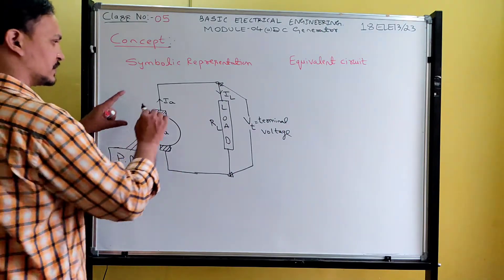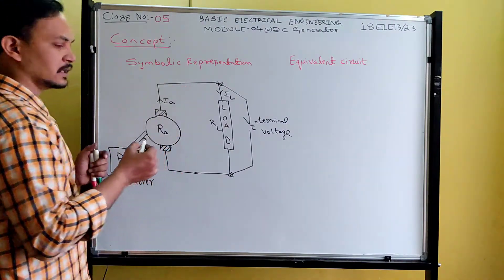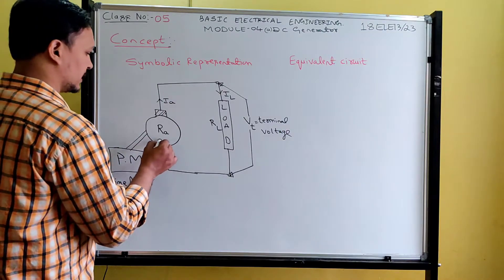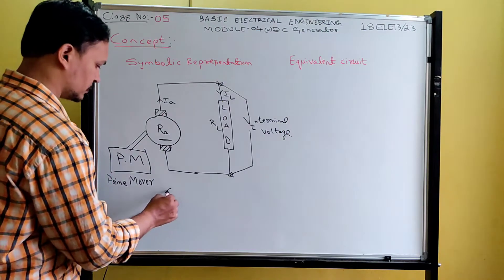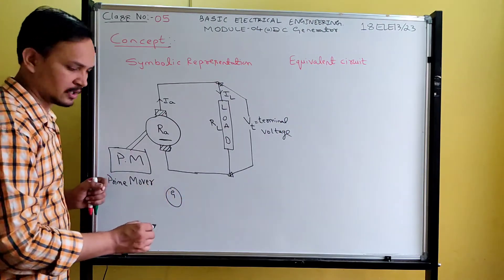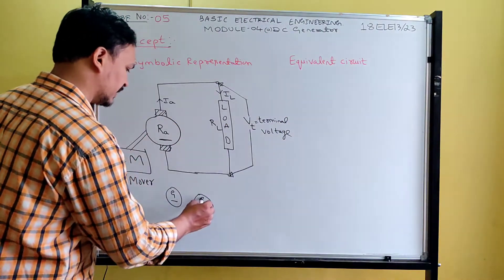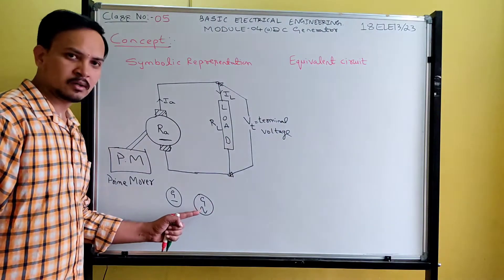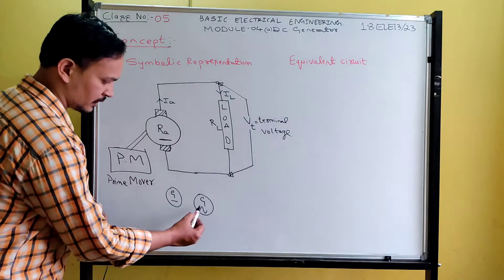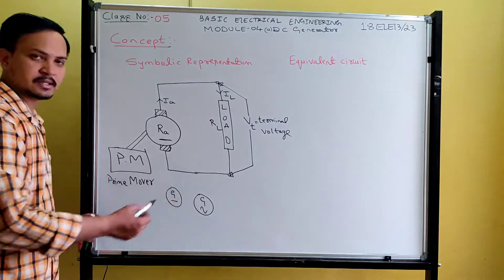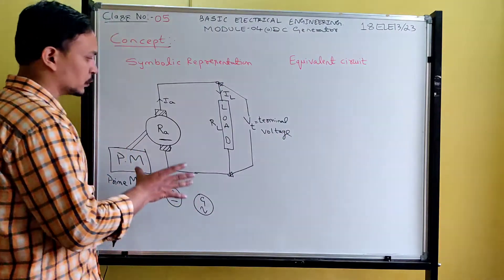This is the symbolic representation. Since we are discussing DC generator, you should write one line inside the circle — that represents DC. So if you draw a circle, write G for generator, and write one line, it is a DC generator. If instead you write a variation sign or waveform beside the symbol, then it is an AC generator. If you write only one line, it is a DC generator.